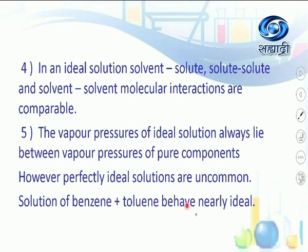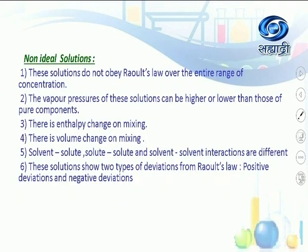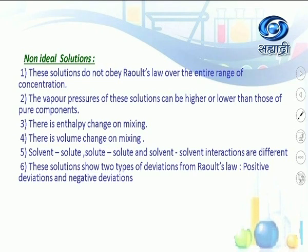However, perfectly ideal solutions are uncommon. Solutions of benzene and toluene are examples. For an ideal solution we have: P1 = P1⁰·X1, P2 = P2⁰·X2, and total pressure P = P1⁰·X1 + P2⁰·X2.